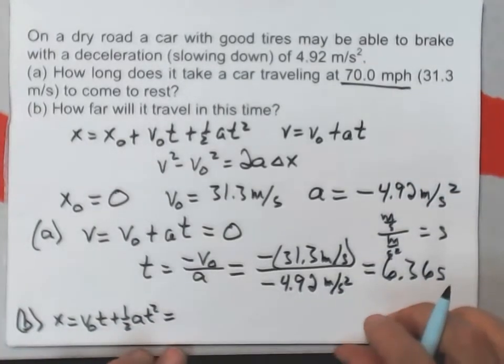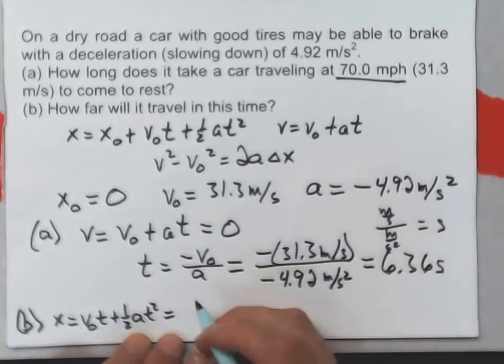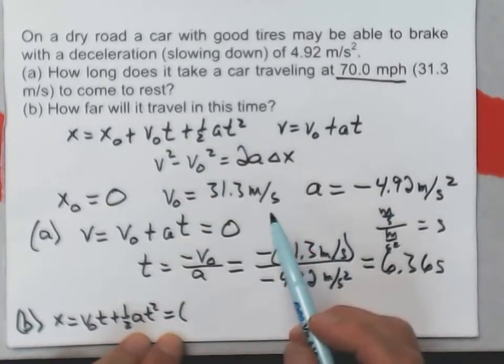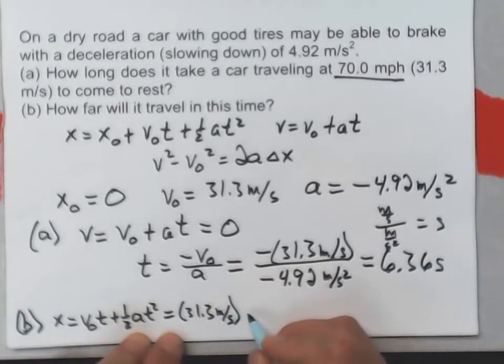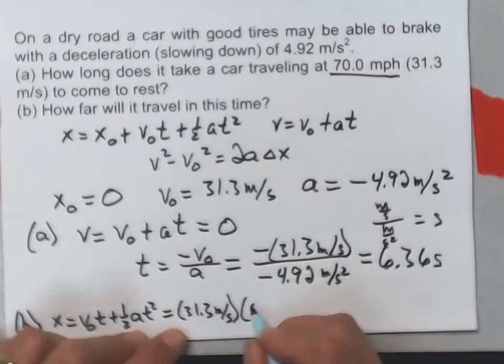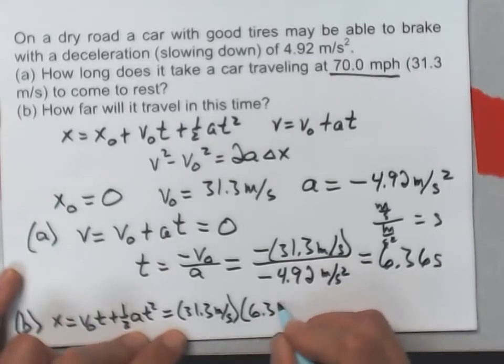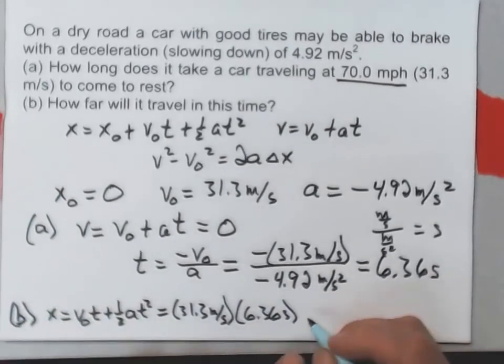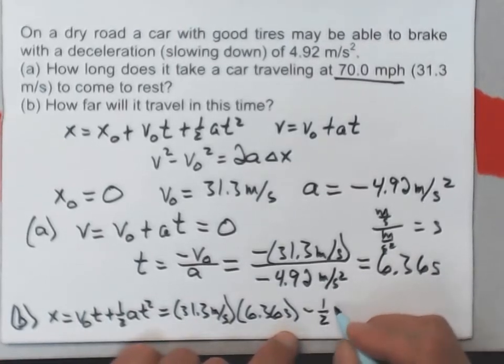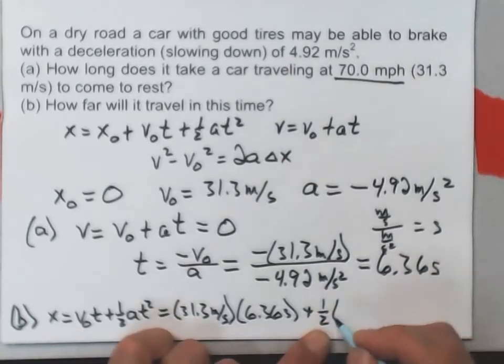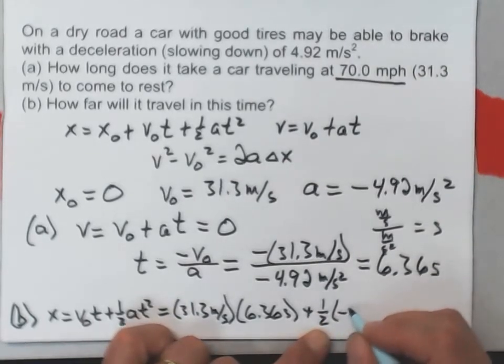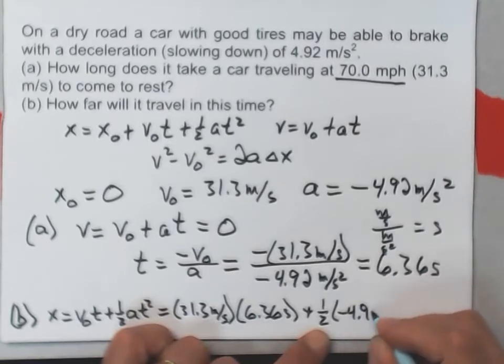and I'll have x equals v naught t plus 1 half a t squared. This is a matter of just plugging the numbers directly into here. And v naught, again, was 31.3 meters per second times the t that I found here, 6.36 seconds minus 1 half times a, which is, or, excuse me,